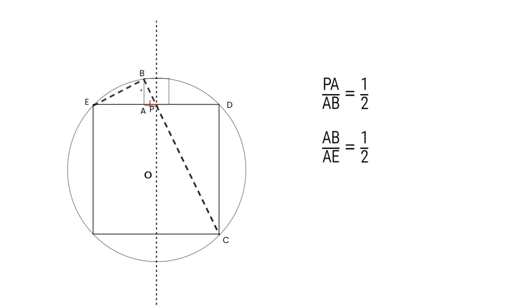Say segment PA is 1 unit. We can get AB equals 2 units and AE equals 4 units.